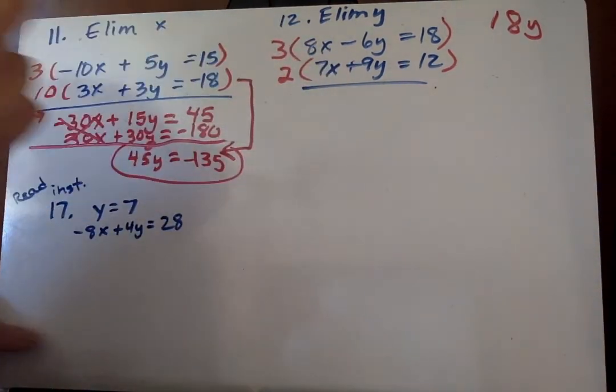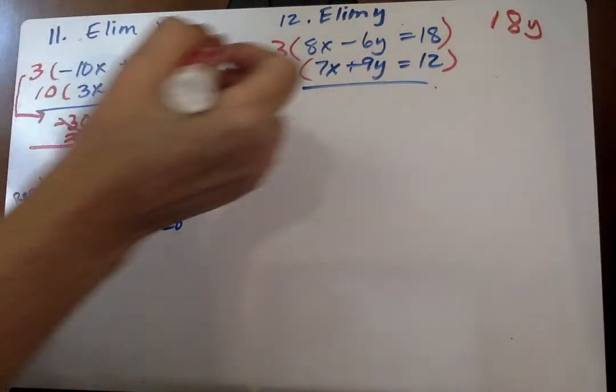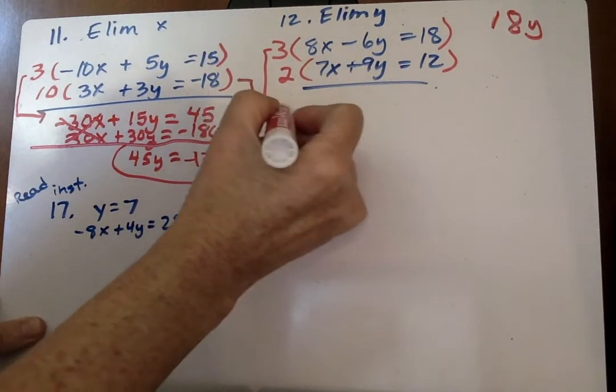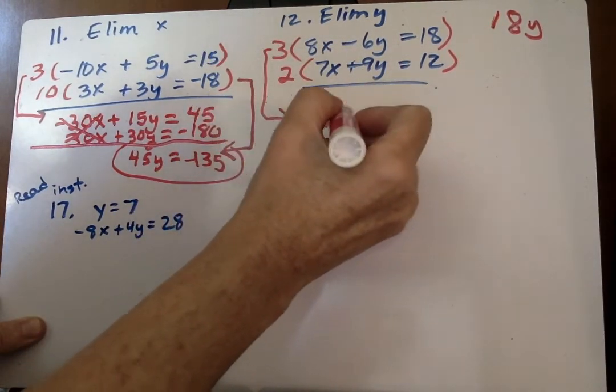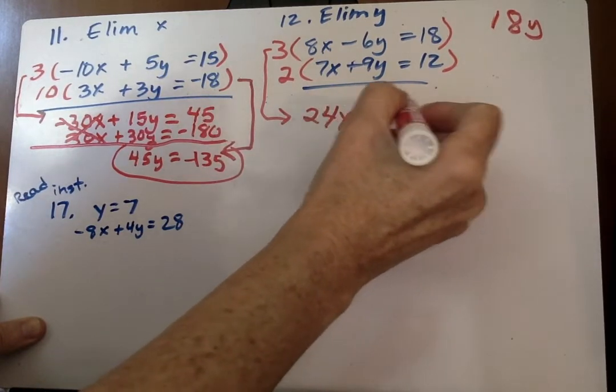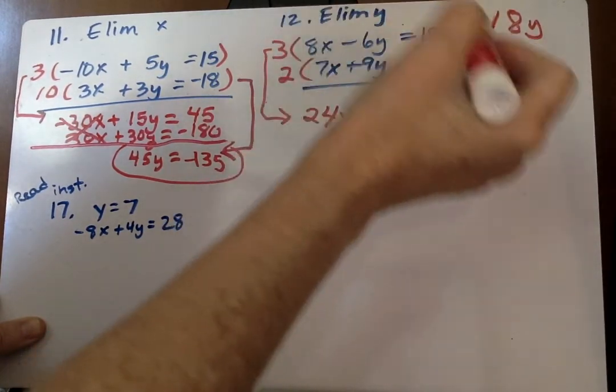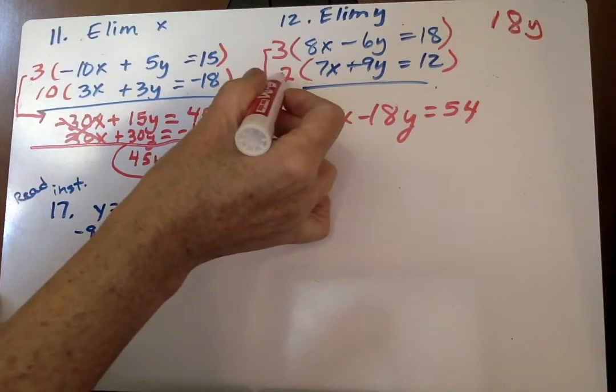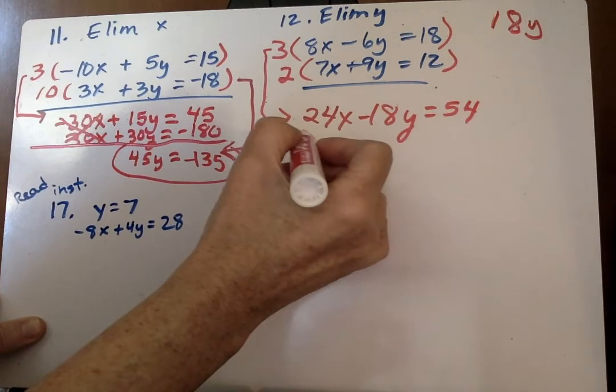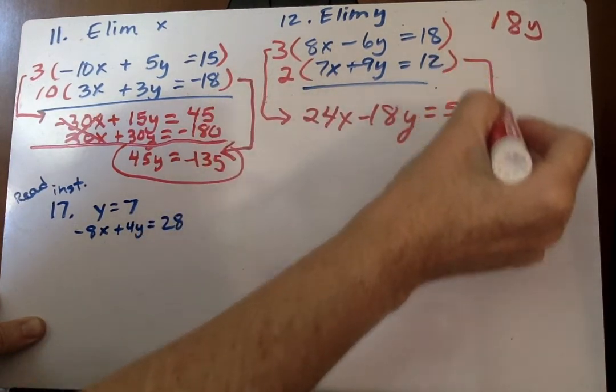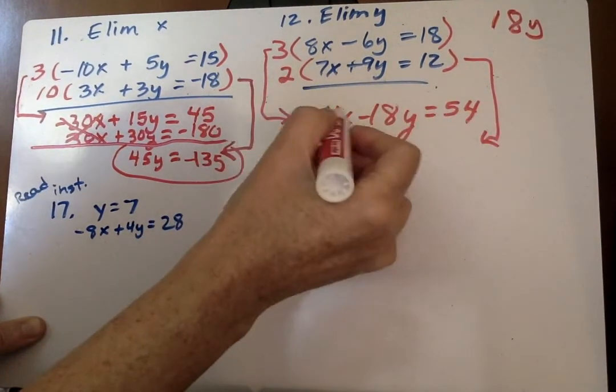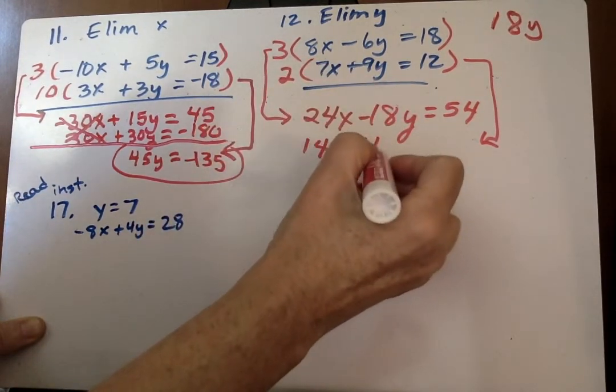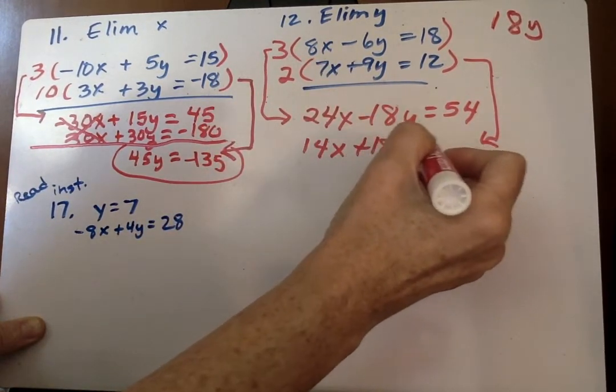So I'm going to take this top equation, and I'm going to say 3 times 8, 24x minus 18y equals 3 times 18, I believe, is 54. If I'm wrong, you can multiply. And then I take the second one, 2 times this, all the way down here, 2 times 7 is 14x plus 18y equals 24.